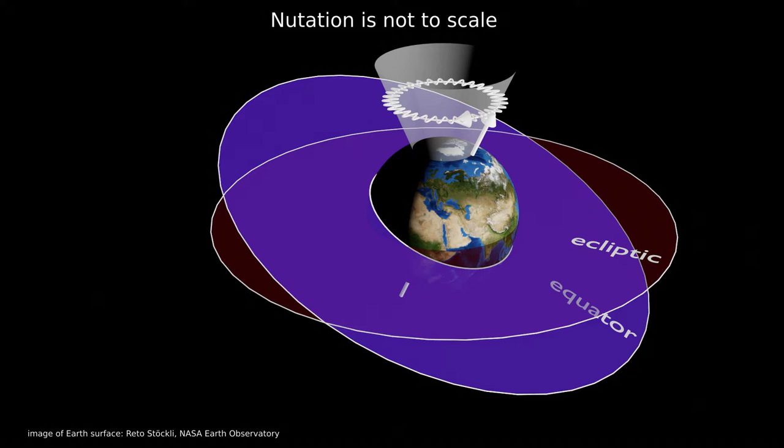Notation is the superposition of short periodic elliptical motions. Each motion is related to the torque arising from a celestial body. The most prominent rotation motion is the one caused by the Moon with a period of 18.6 years.